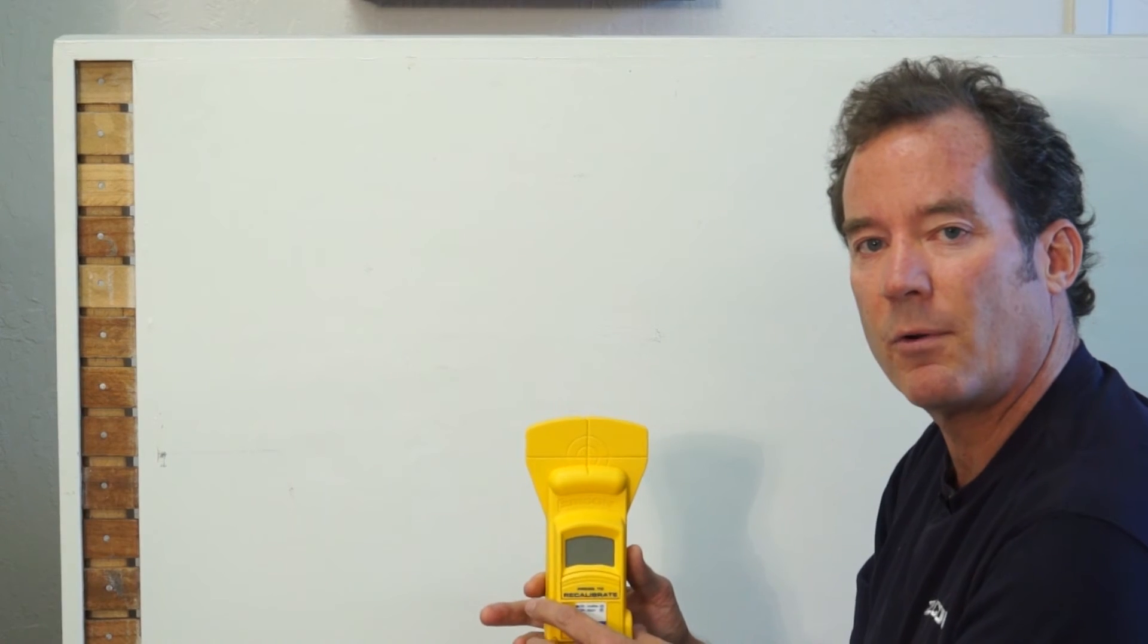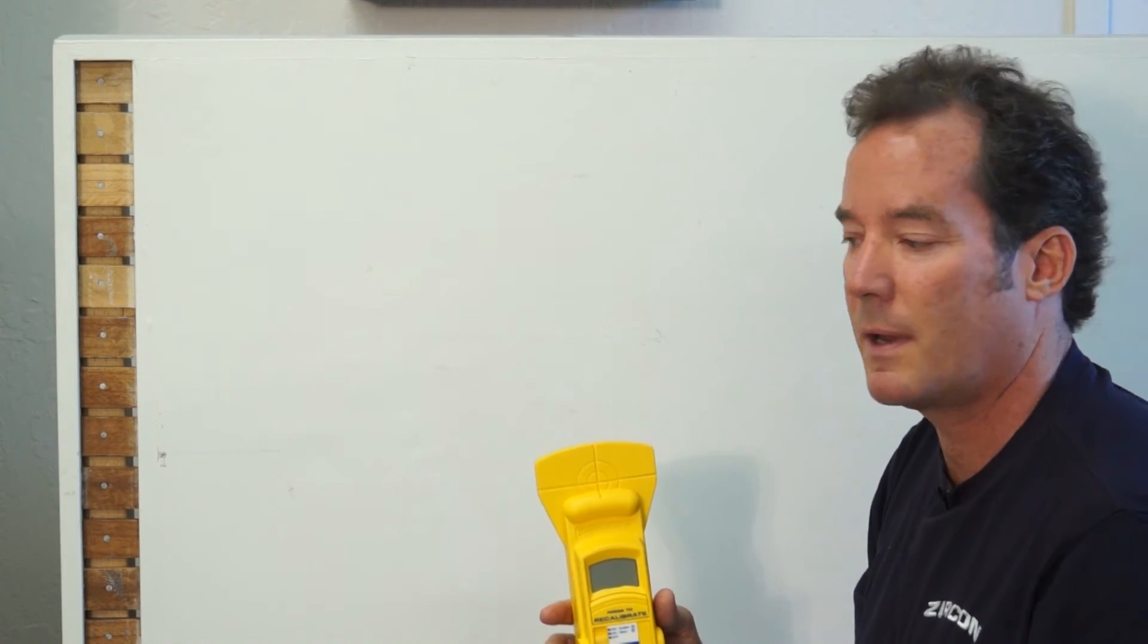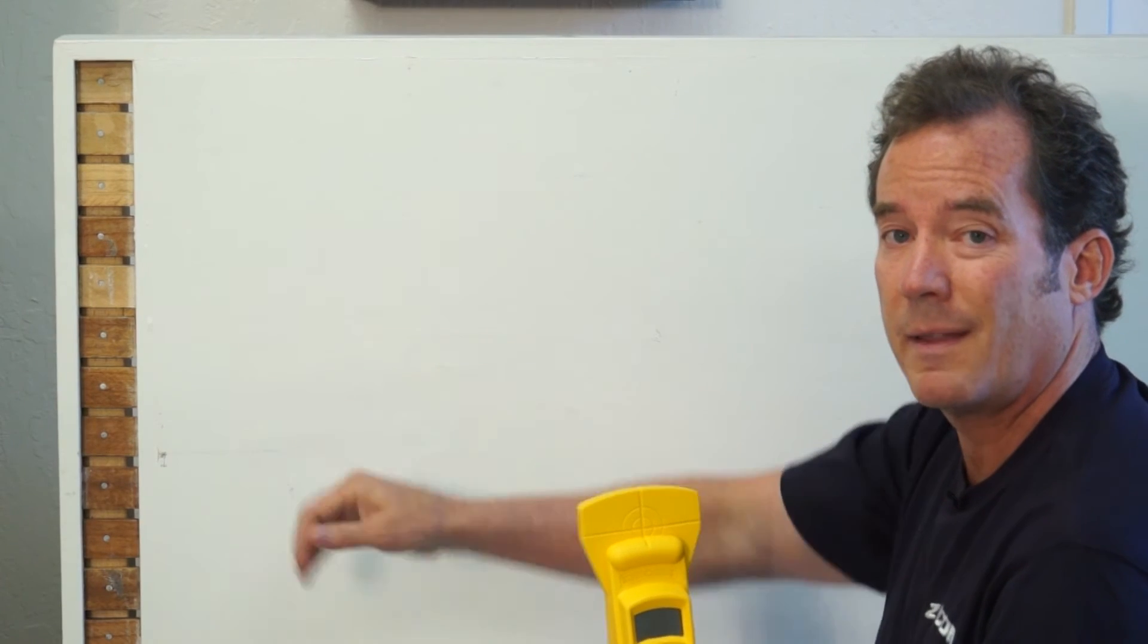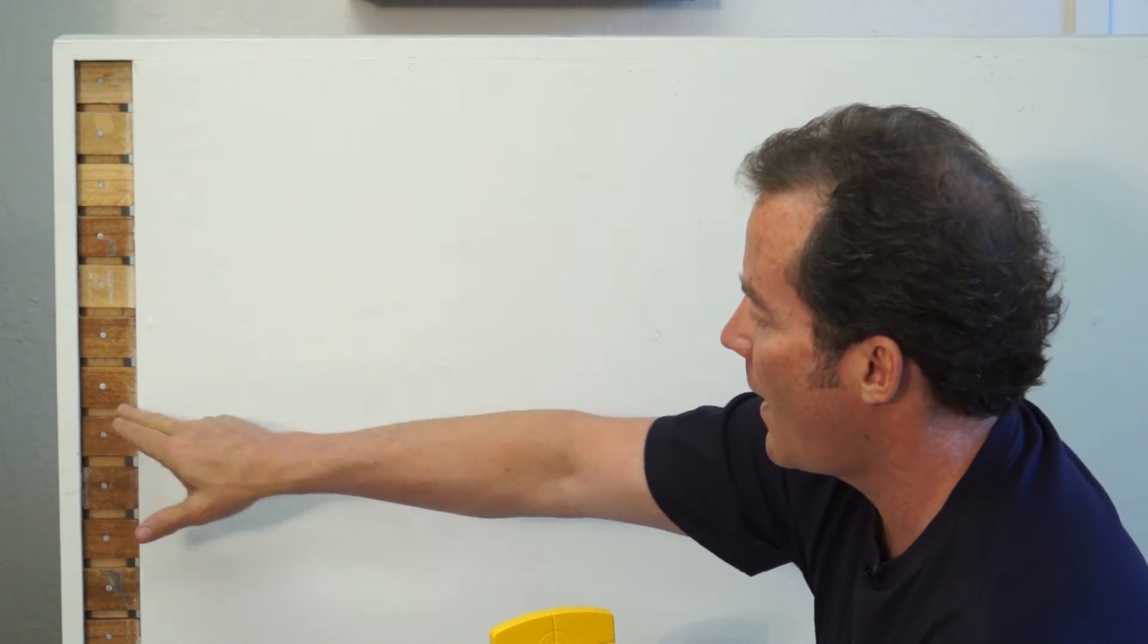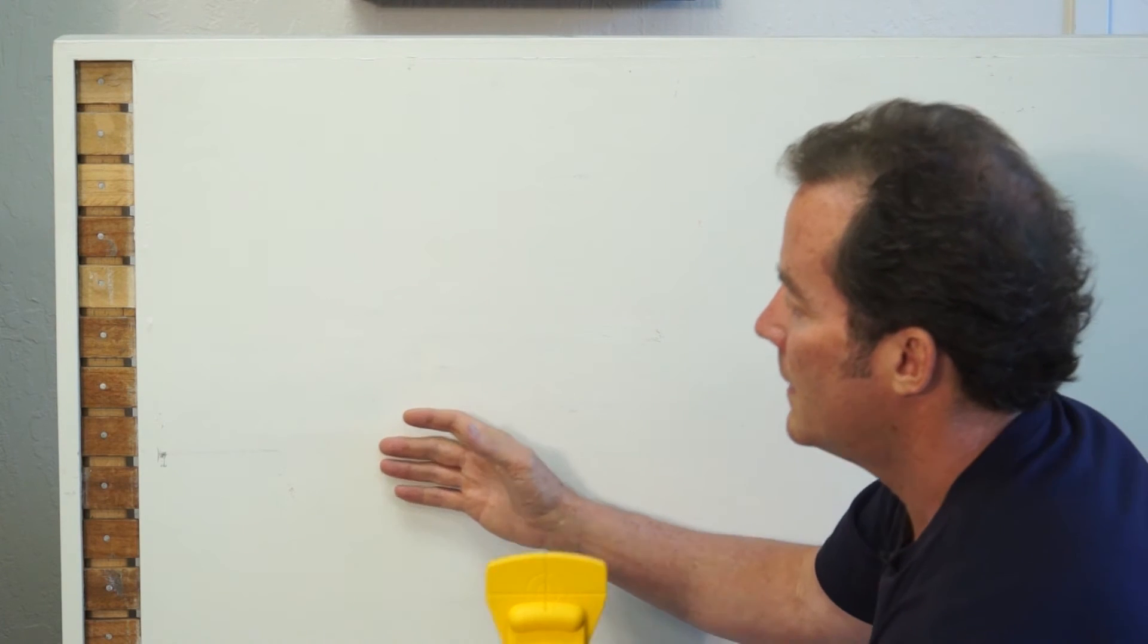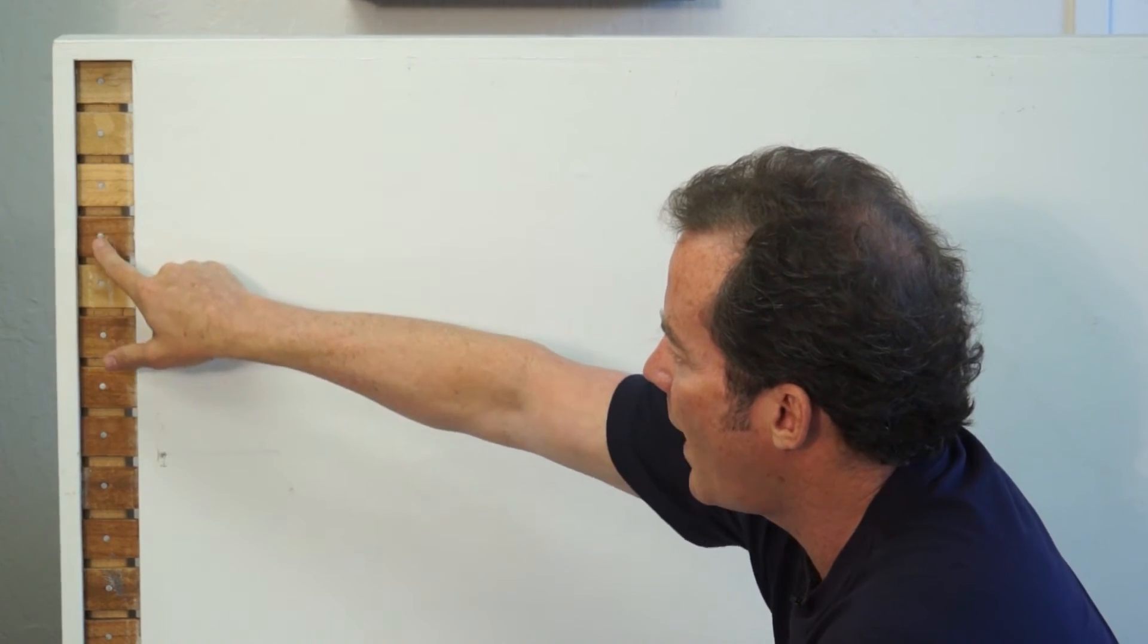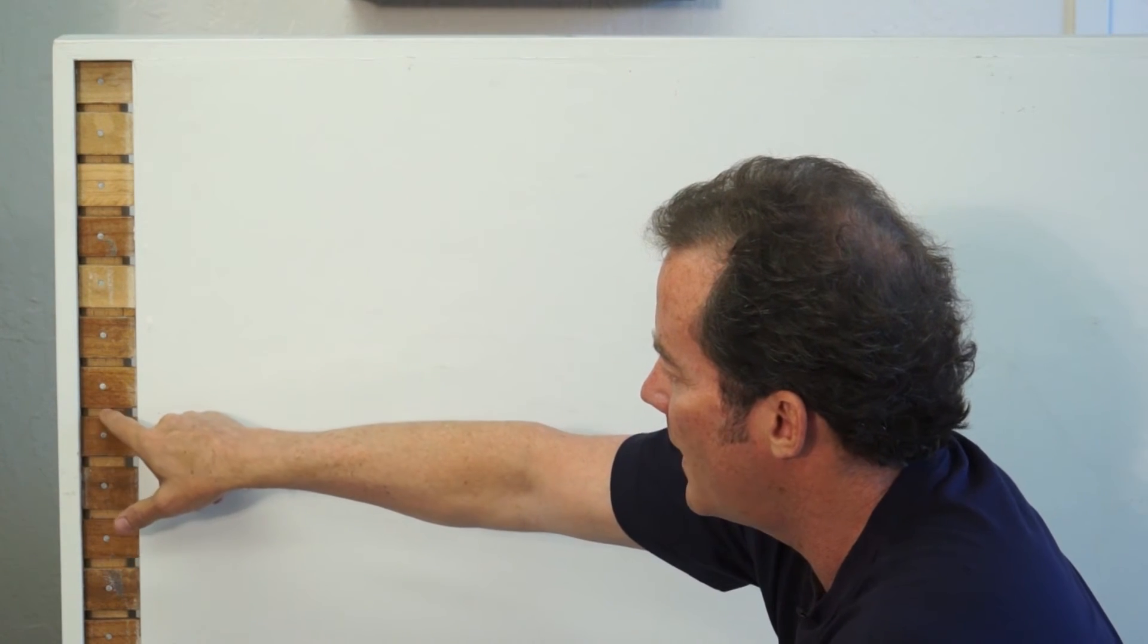But the other thing you can use it for that's really handy is finding studs in lathe and plaster walls. This is difficult for a traditional stud finder because even though this lathe and plaster wall is very smooth on the surface, the backside has all kinds of plaster that squishes through the cracks and keys onto the other side. So it's a very inconsistent thickness. What I'm going to do is look for the tiny nails or little brad tacks that are fastening every piece of lath to the stud.